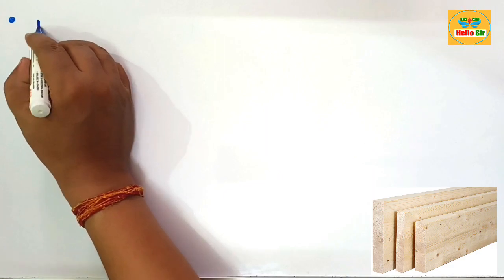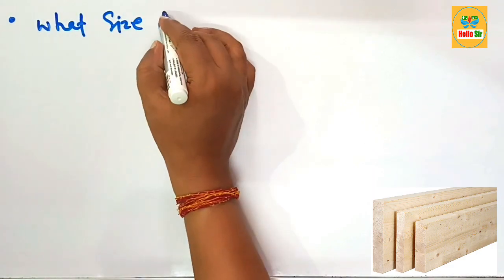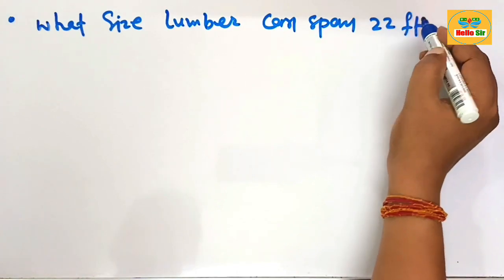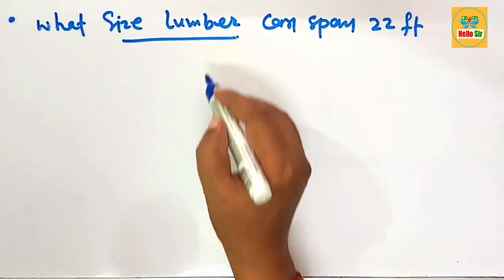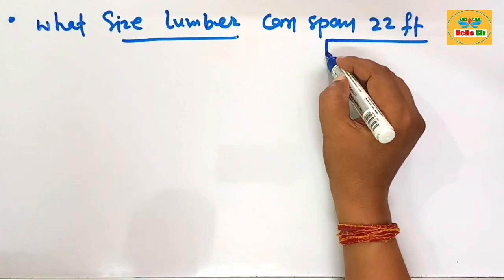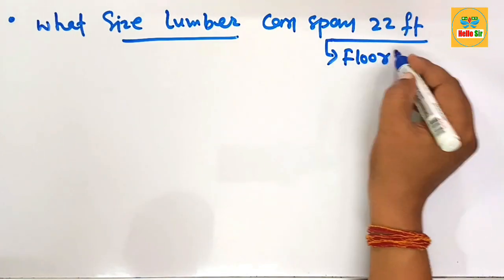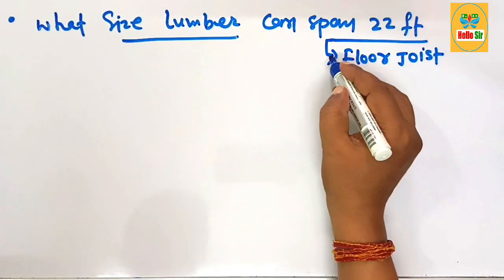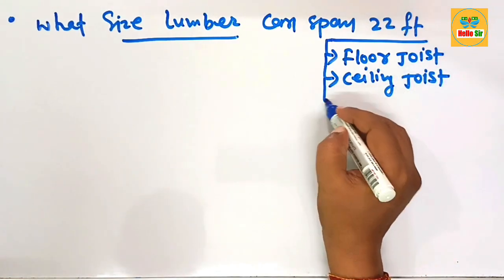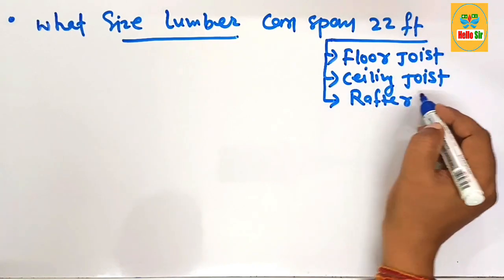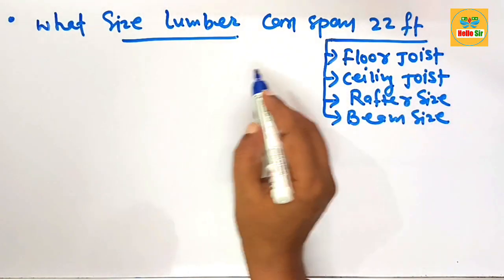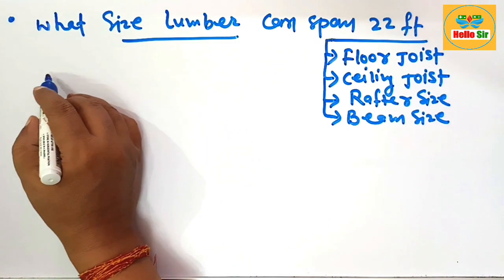In this video, you will learn what size lumber can span a 22-foot distance. The topics covered include the floor joist size, the ceiling joist size, the rafter size, and the beam size required to span 22 feet.